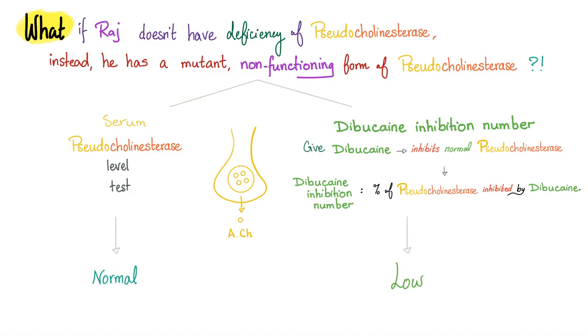What's dibucaine? It's like lidocaine. It's a local anesthetic. You give it to the patient. It should inhibit their normal pseudocholinesterase. And then you measure the dibucaine inhibition number. What the flip is that? That's the percentage of your pseudocholinesterase that has been inhibited by dibucaine. If Raj had normal serum cholinesterase level but a low percentage or low dibucaine inhibition number, you have your diagnosis. Raj has a mutant, non-functioning form of pseudocholinesterase. You better be careful before giving succinylcholine. Otherwise, Raj can suffer from prolonged apnea after surgery or prolonged muscle relaxation after surgery. The crazy anesthesiologist will claim there must be something wrong with Raj. Shut up. There is just something wrong with your brain. You do not have two brain cells that rub together. No pun intended.